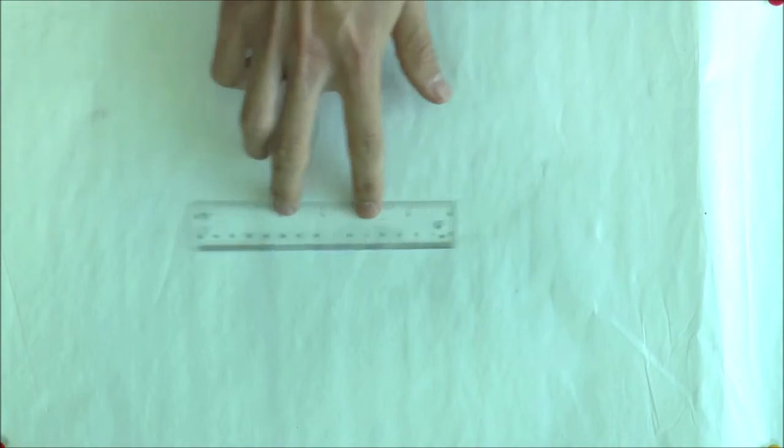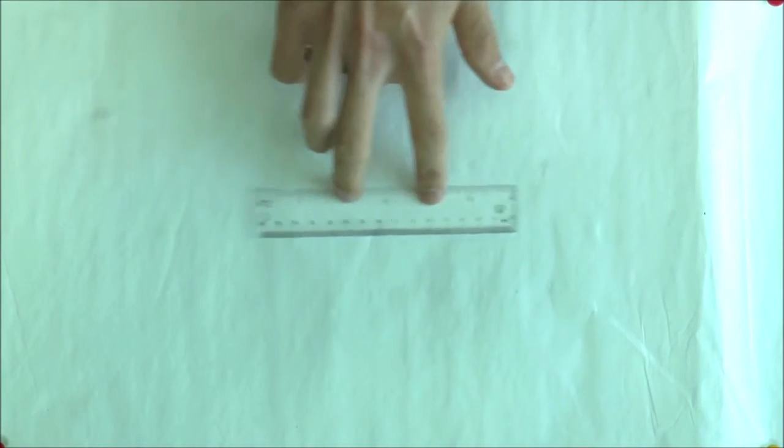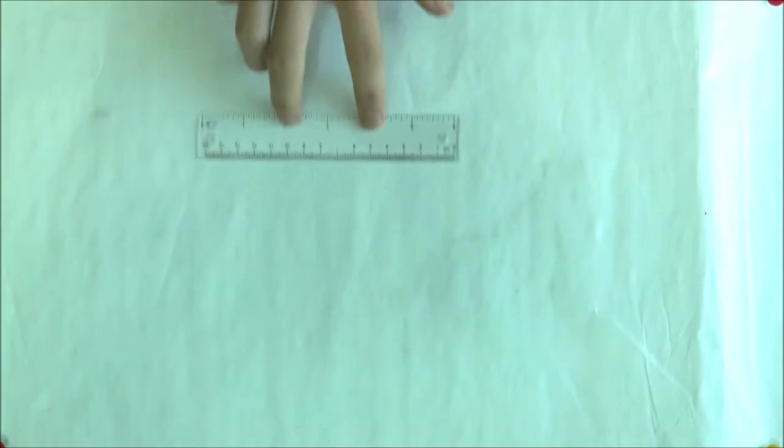Imagine a two-dimensional object in a plane, like a ruler on a table. The ruler can translate in either dimension, forwards and backwards, left and right.